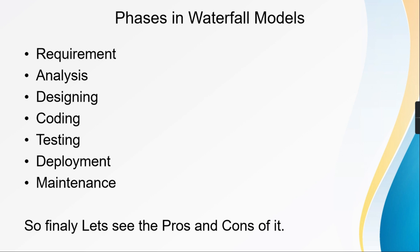These are the phases in the waterfall model: requirement gathering, then analysis of the requirements, then designing — high level design, low level designing and documents — then coding, testing, deployment, and maintenance. This is the general specific sequence followed in the waterfall model, and using this model the software is developed and finally delivered to the customers.